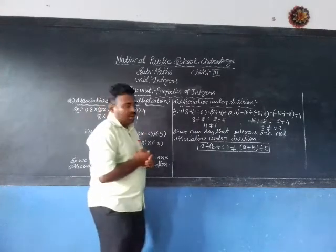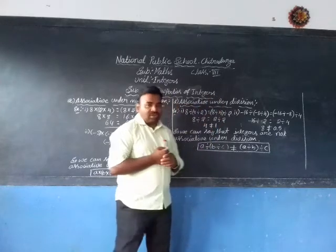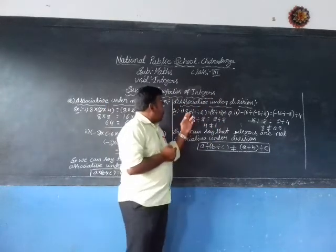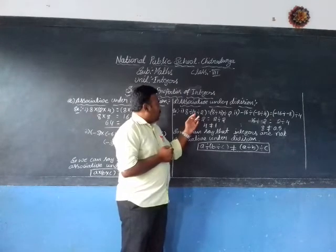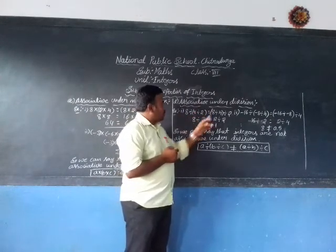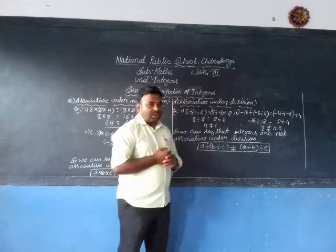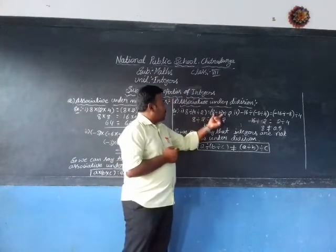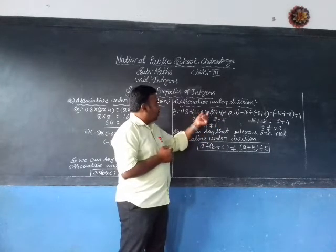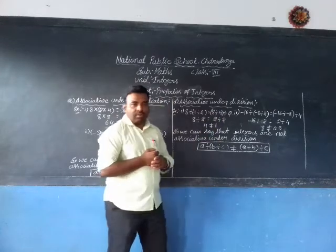Now the last topic: associative under division. Here is an example: (8 ÷ 4) ÷ 2 = 8 ÷ (4 ÷ 2). The groups are changed: on the left hand side, 4 and 2 are in the group; on the right hand side, 8 and 4 are in the group.